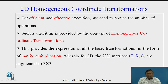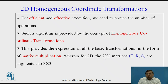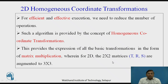In homogeneous coordinate transformations, if we take the case of two-dimensional things, we augment that 2 by 2 matrix to 3 by 3 for any kind of translation, rotation, and scaling kinds of geometric transformations required.